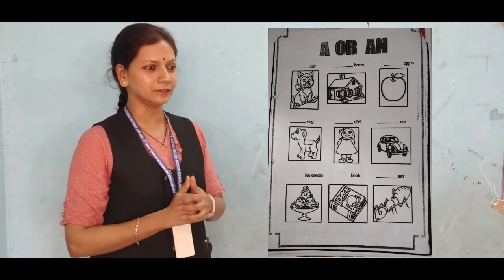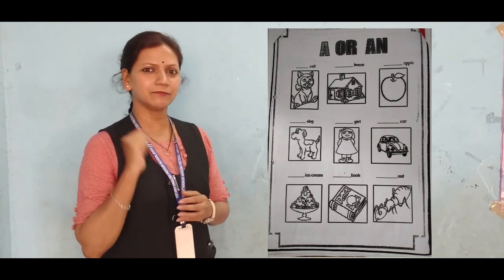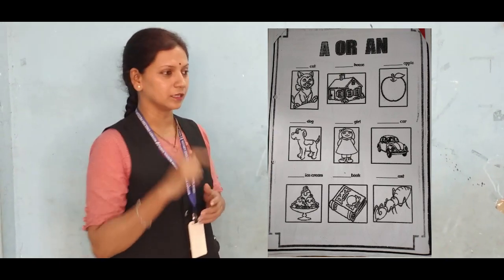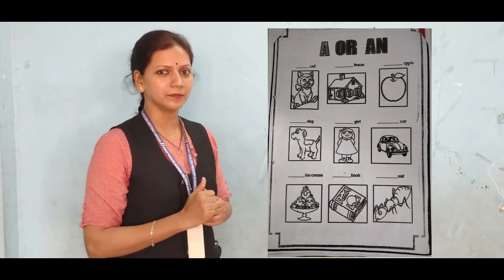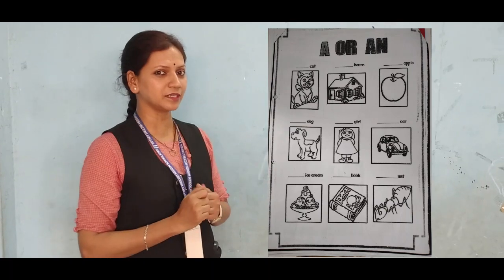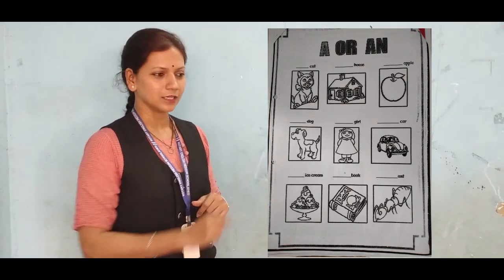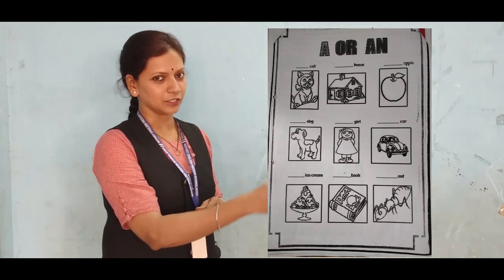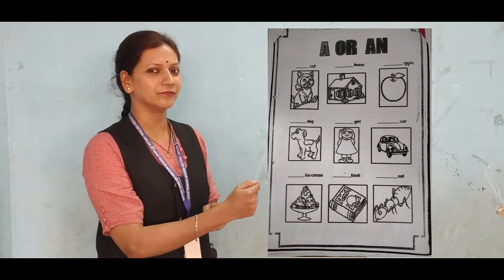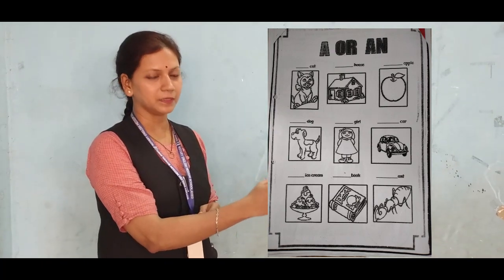Next, Summipora, come on, stand up and tell me the answer. Look at this picture and please answer. Which picture is this? Exactly — this is a book. B is a consonant. So here, what will we use? Very good — a book. B is a consonant.